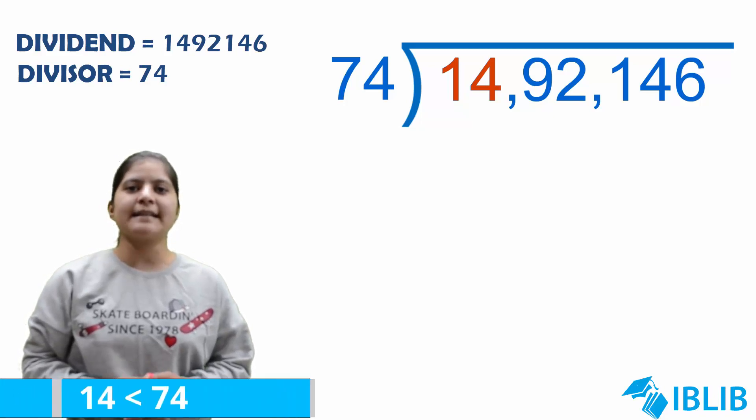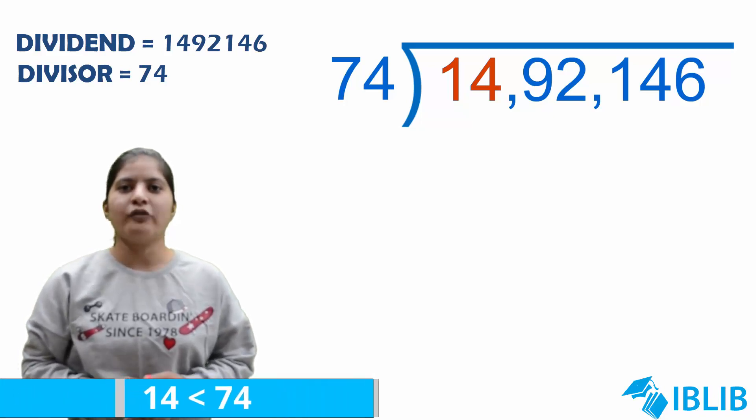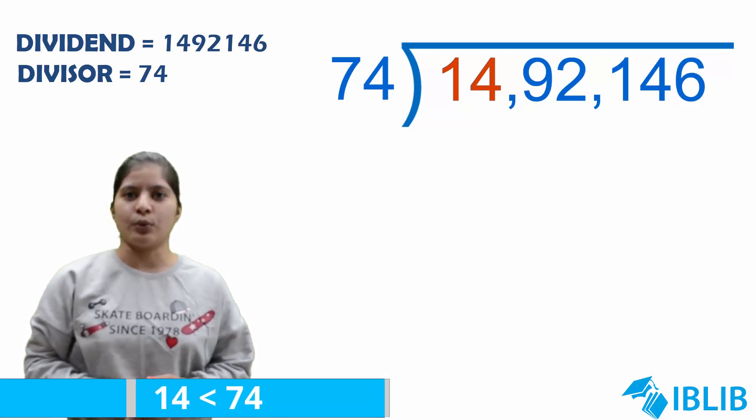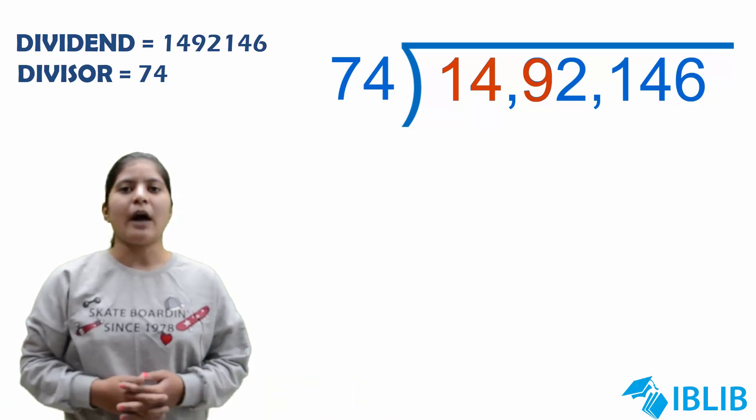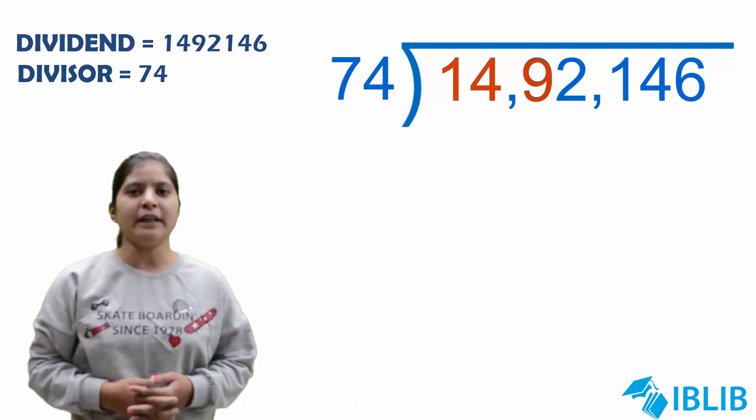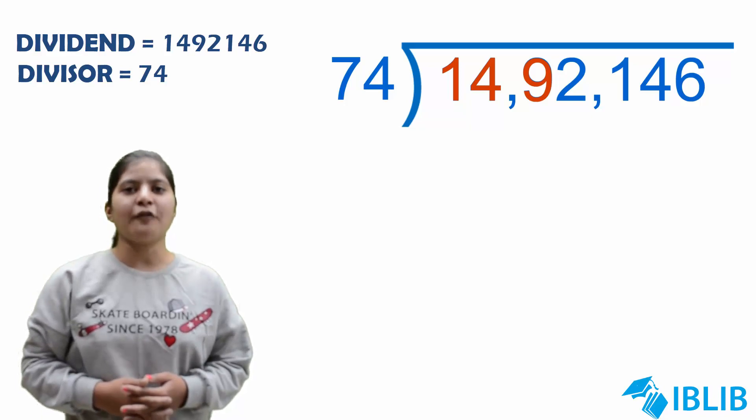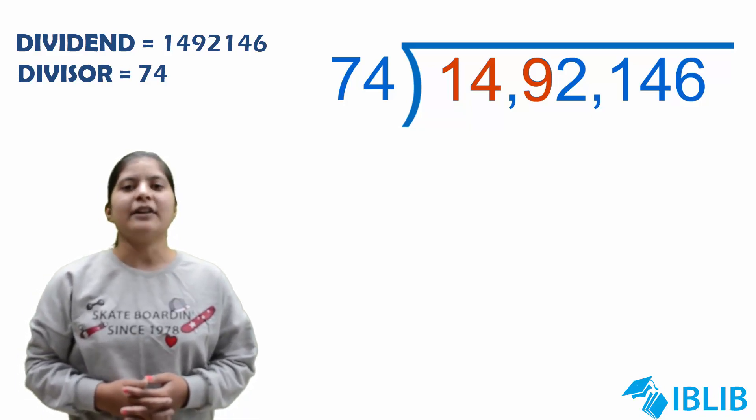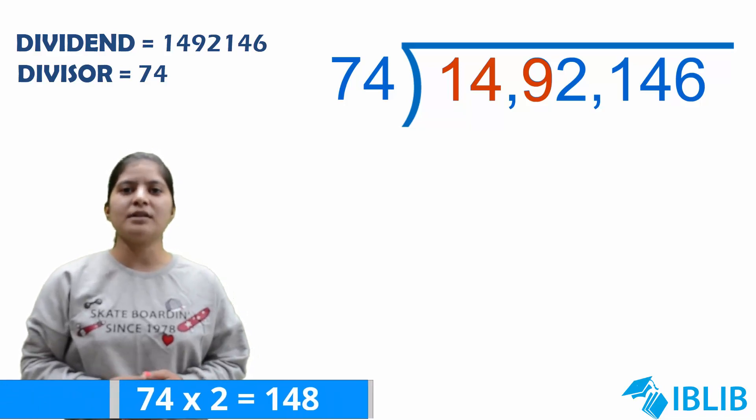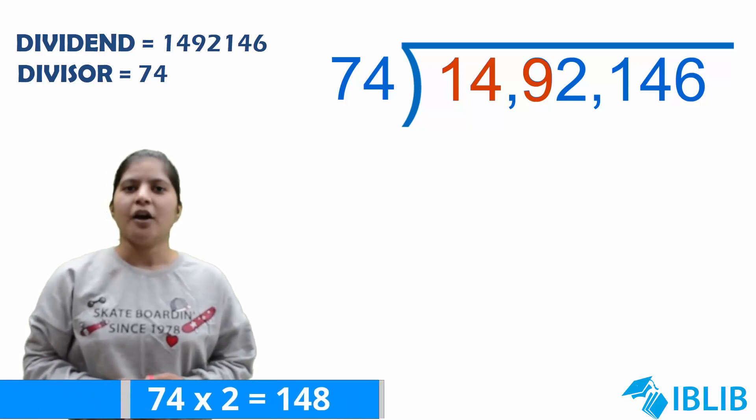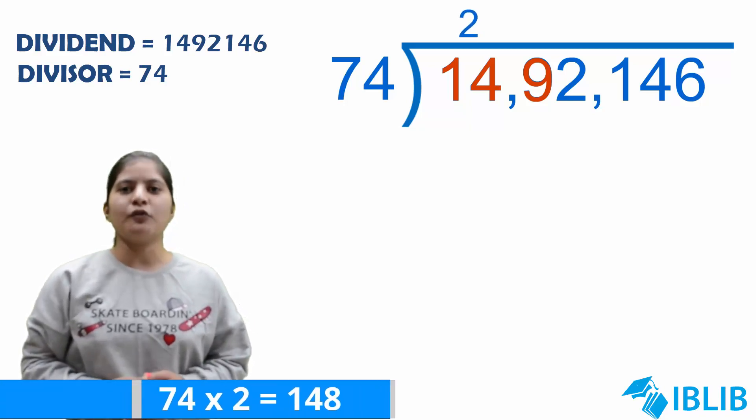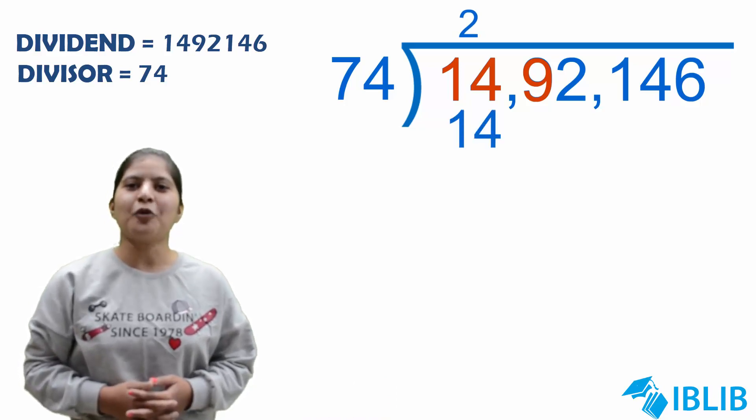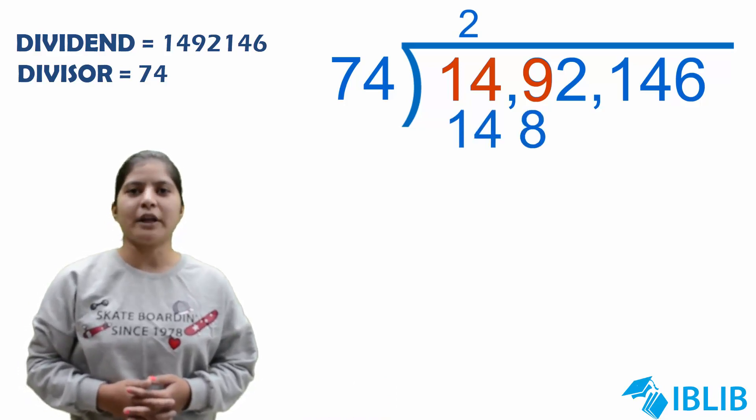Again, 14 is less than 74. So, we will take the next digit also that is 9. Now, we are having 149. It means we have to divide 149 by 74. 74 times 2 gives us 148. We will write 2 at the place of quotient and 148 below 149.